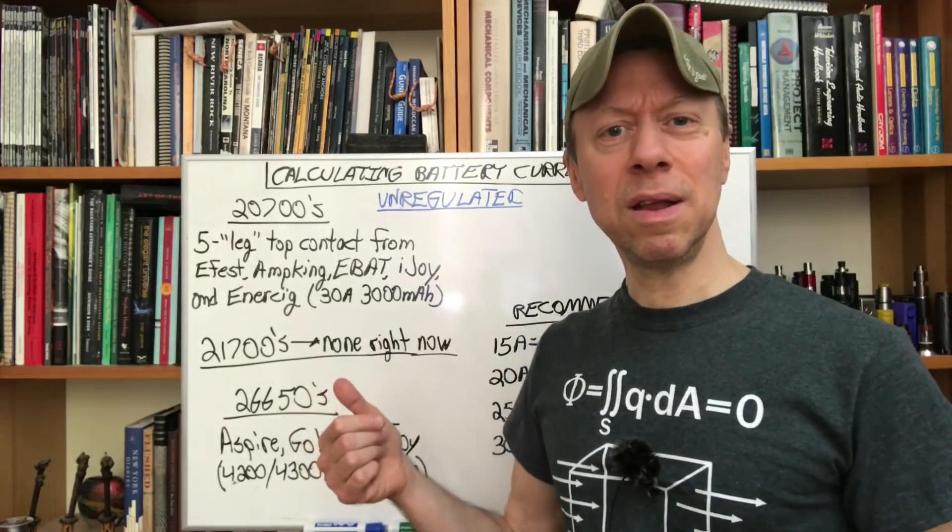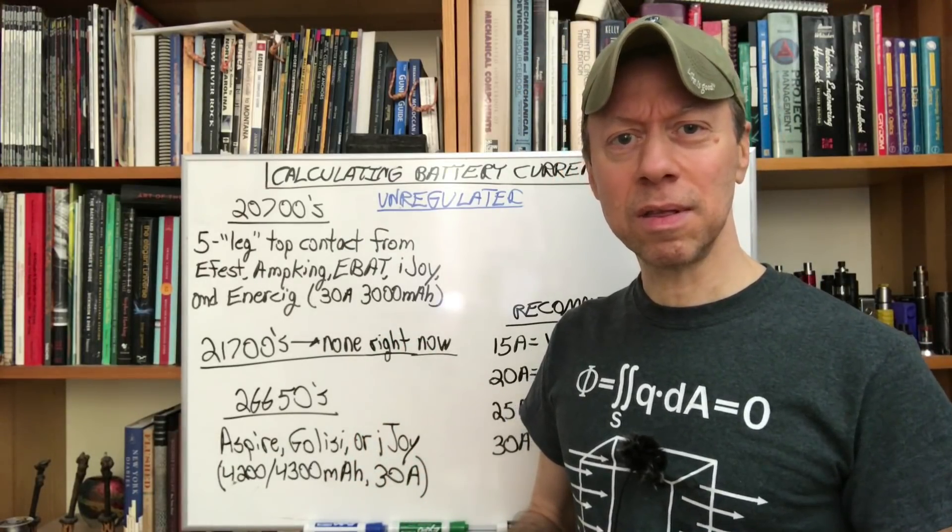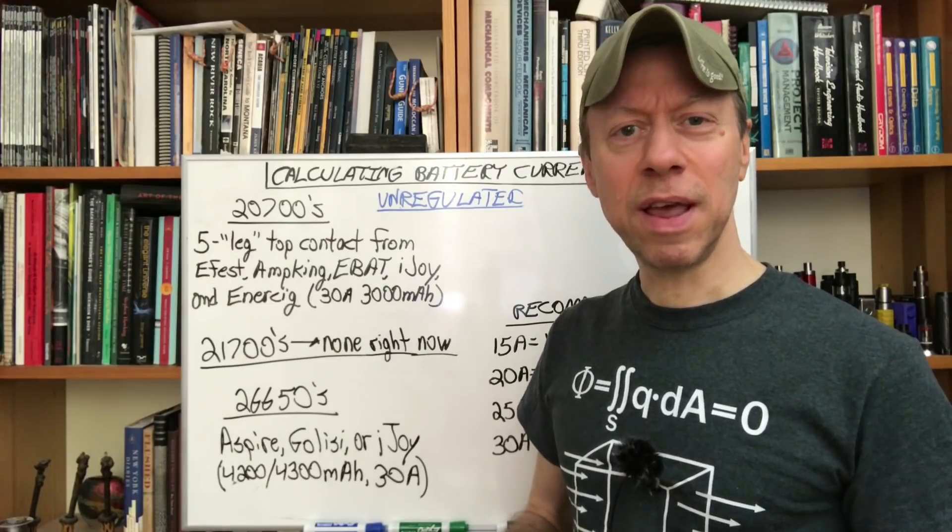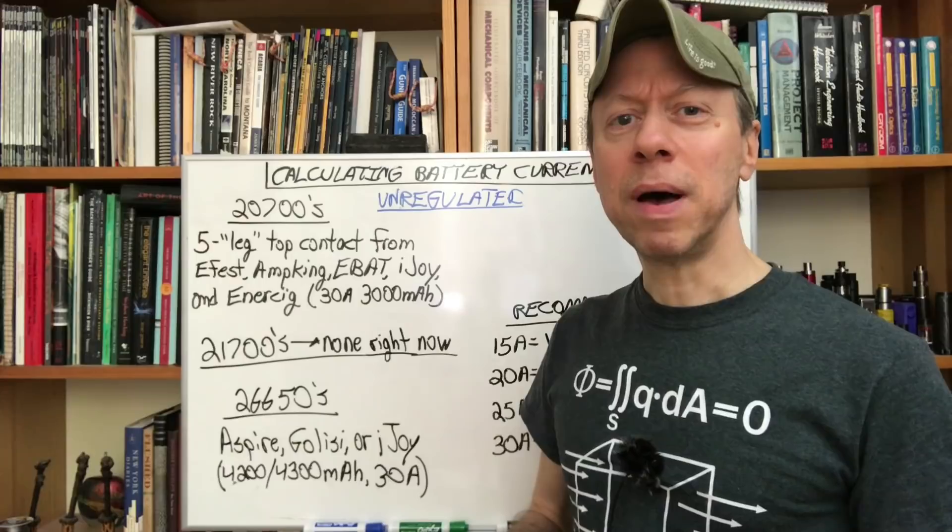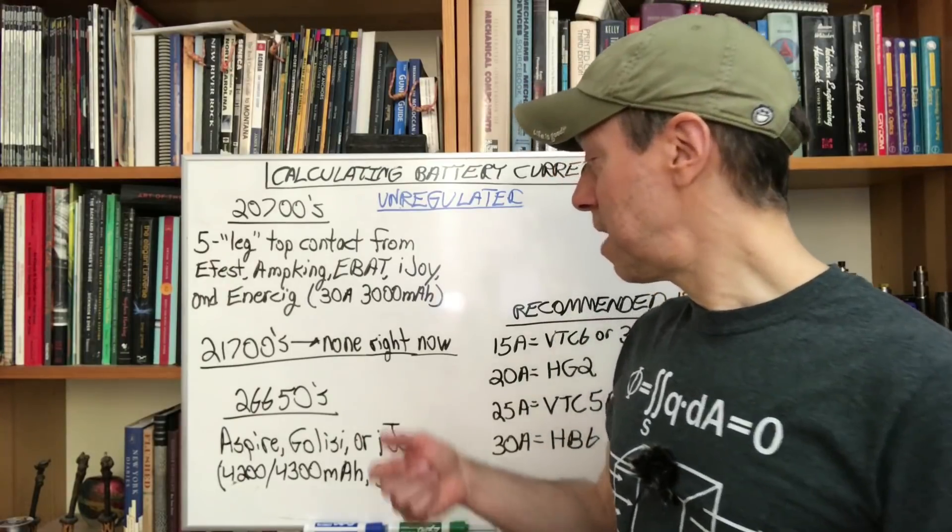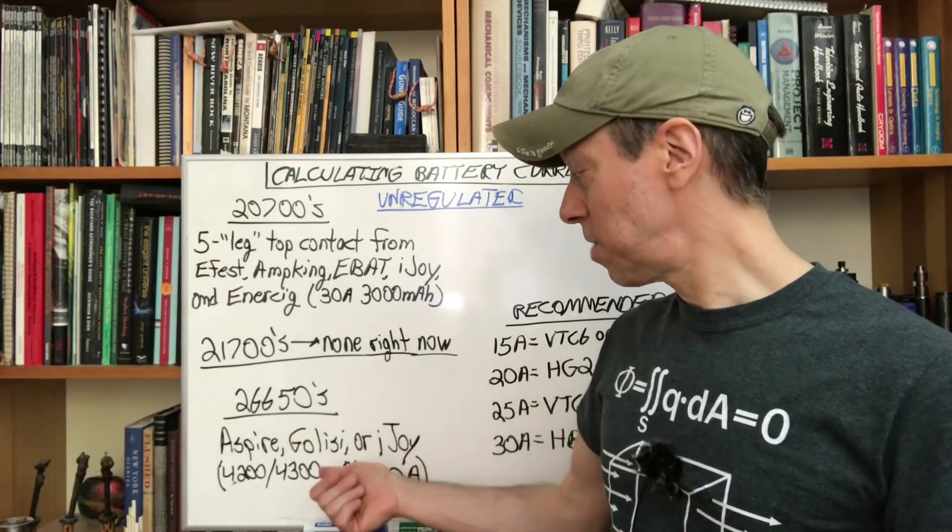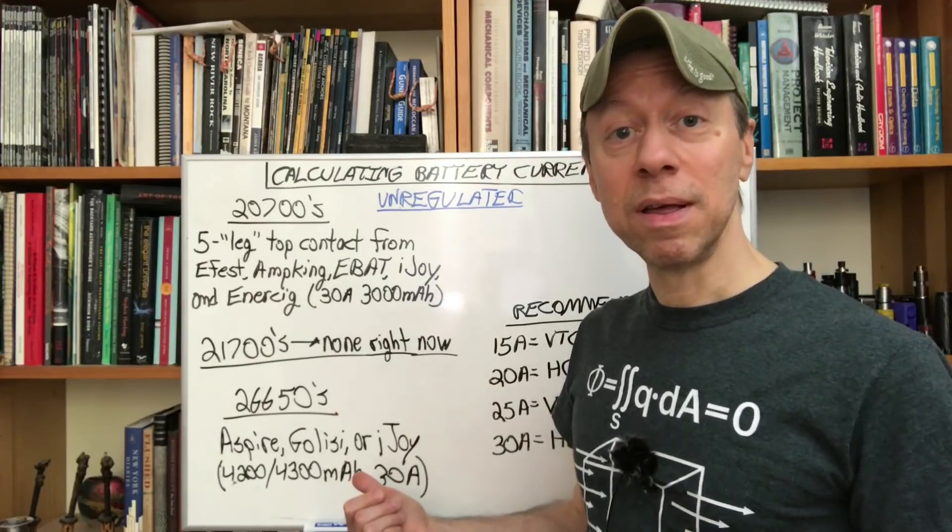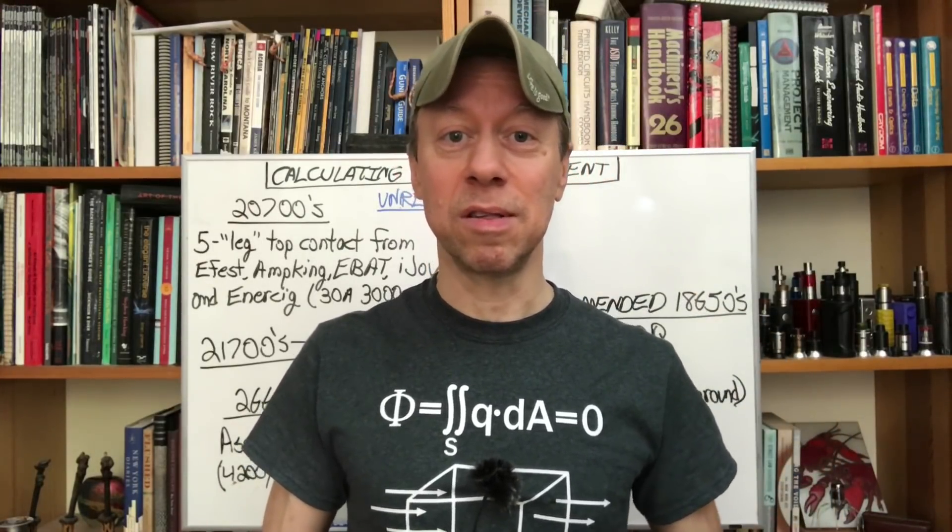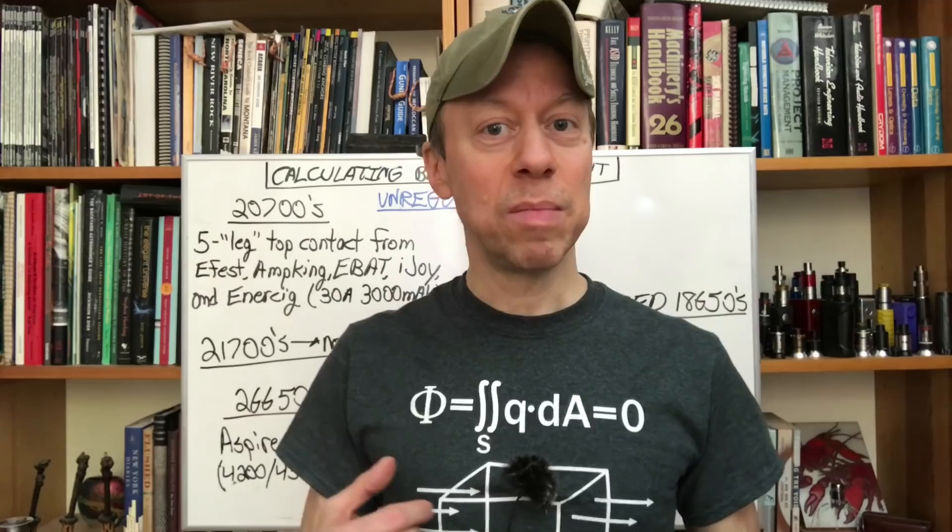For the 21700s there really are none that stand out right now. There will be later this year but right now none. Golisi S35 and a couple other cells that are also rewrapping the same cell that Golisi is looks pretty good on the 25 to 30 amp range, 3750 mAh. But I'm still testing those, I still can't recommend them yet. For 26650s really just one, the Aspire, Golisi or iJoy, it's their 4300, 4200 mAh, 30 amp battery. It's all the same battery underneath the wrap from Aspire, Golisi, iJoy. It's a decent battery. 26650s aren't hard hitters, it's a size factor made for longer running energy applications not high power applications. So you get higher capacity but you're not going to hit as hard as some of the best 18650s are.